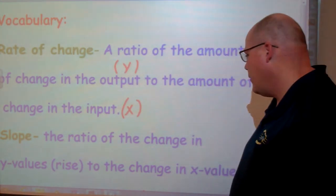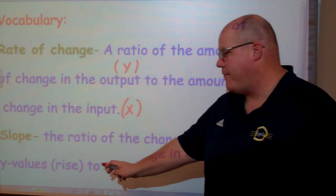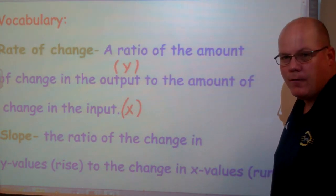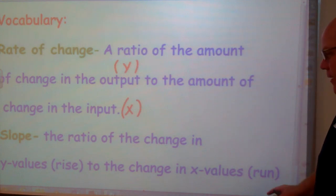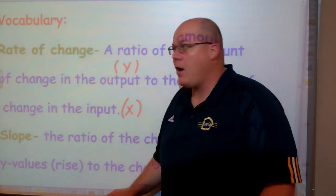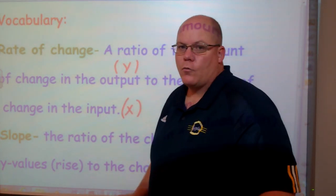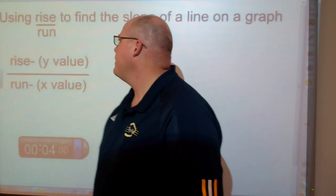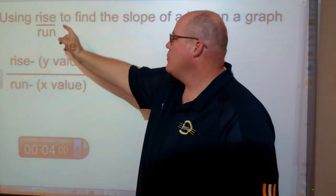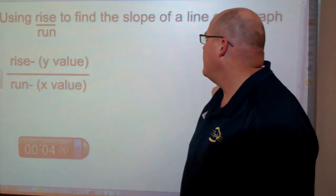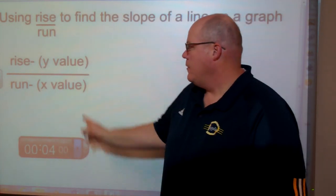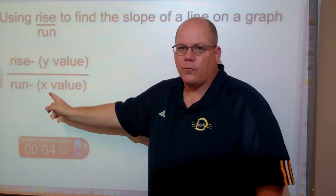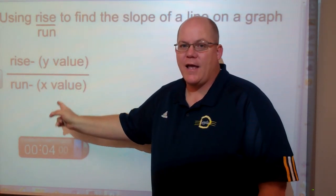Slope is the ratio of the change in the y value — the rise — to the change in the x value. Our x value is our run. So we're going to be talking about rise over run on a coordinate plane. Our rise is the y value and our run is the x value.